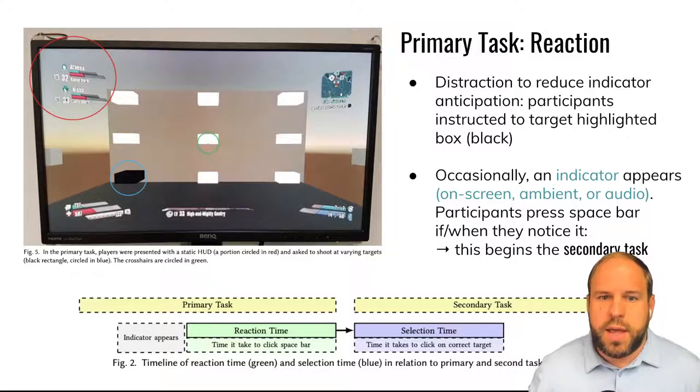And then depending on the condition, it's either an indicator from audio, on screen, or ambient. And then the people had to press the spacebar when they realized the indicator had appeared. Otherwise, the primary task would continue. They'd have to select the next target. So once the spacebar was pressed, the primary task, the wall and the targets disappeared and the secondary task started.